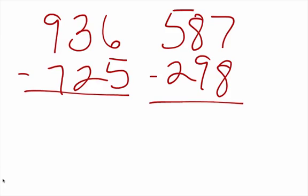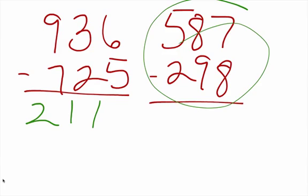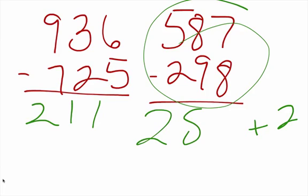Let's do these last two. Before we do anything, we want to make sure we have to borrow. If we don't, just go left to right: 2, 1, 1 — that's 211. And our last one: 587 minus 298. How far do we have to go up to get to 300? Only 2. So 587 minus 300 is 287, plus 2 gives us 289.